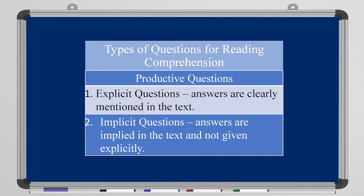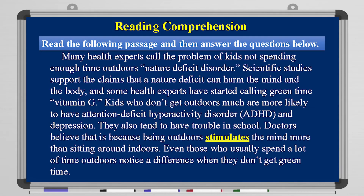Now let's look at productive questions. Productive questions are two types: explicit and implicit. An explicit question is one where the answer is directly mentioned in the text — you will find it in the reading passage if you read carefully. An implicit question is one where the answer is not directly in the text — you need to understand the text in order to answer it. Let's look at a few examples. Screenshot this slide so you can read it at your own pace — I'm going to read it now very thoroughly.